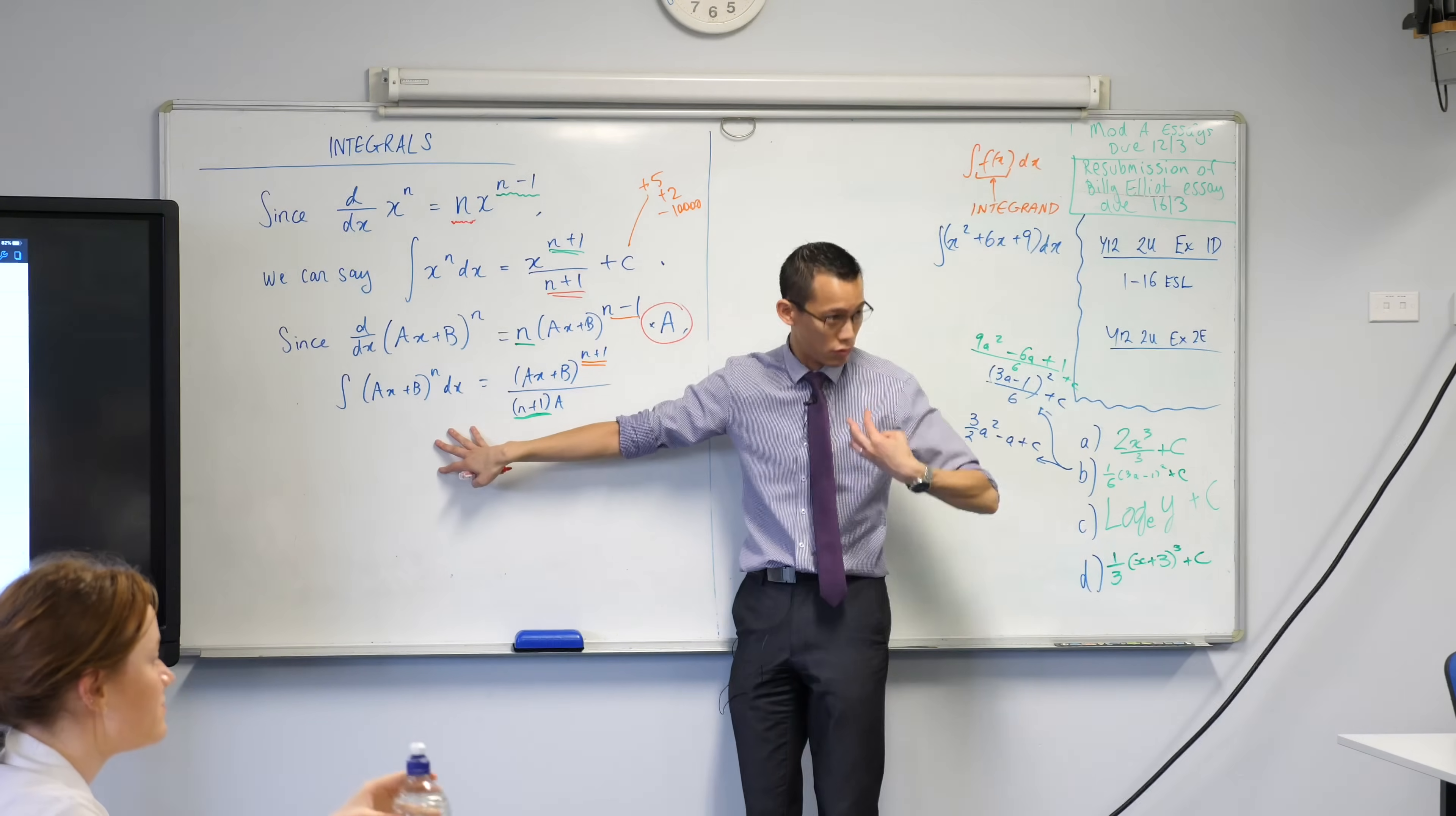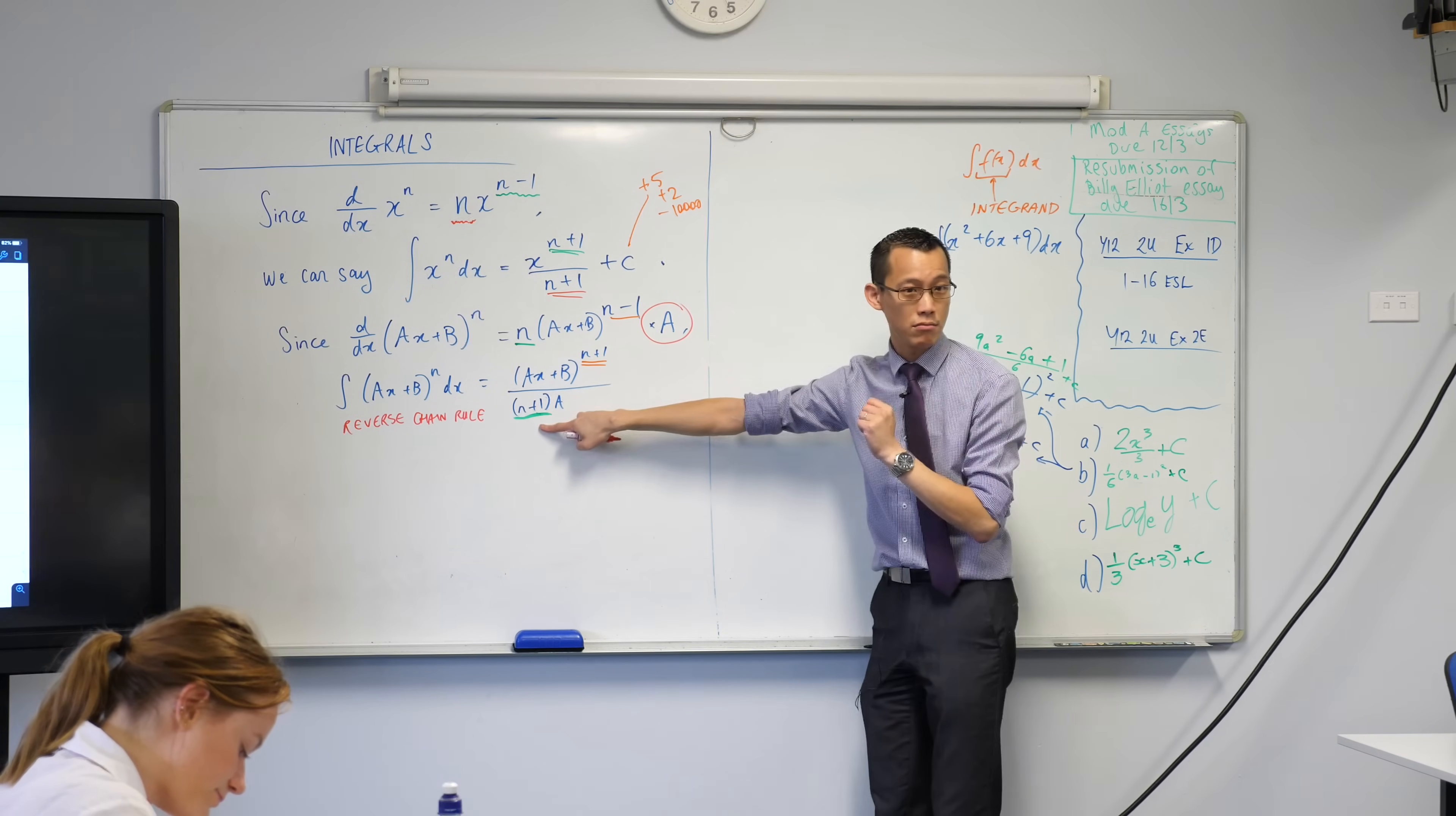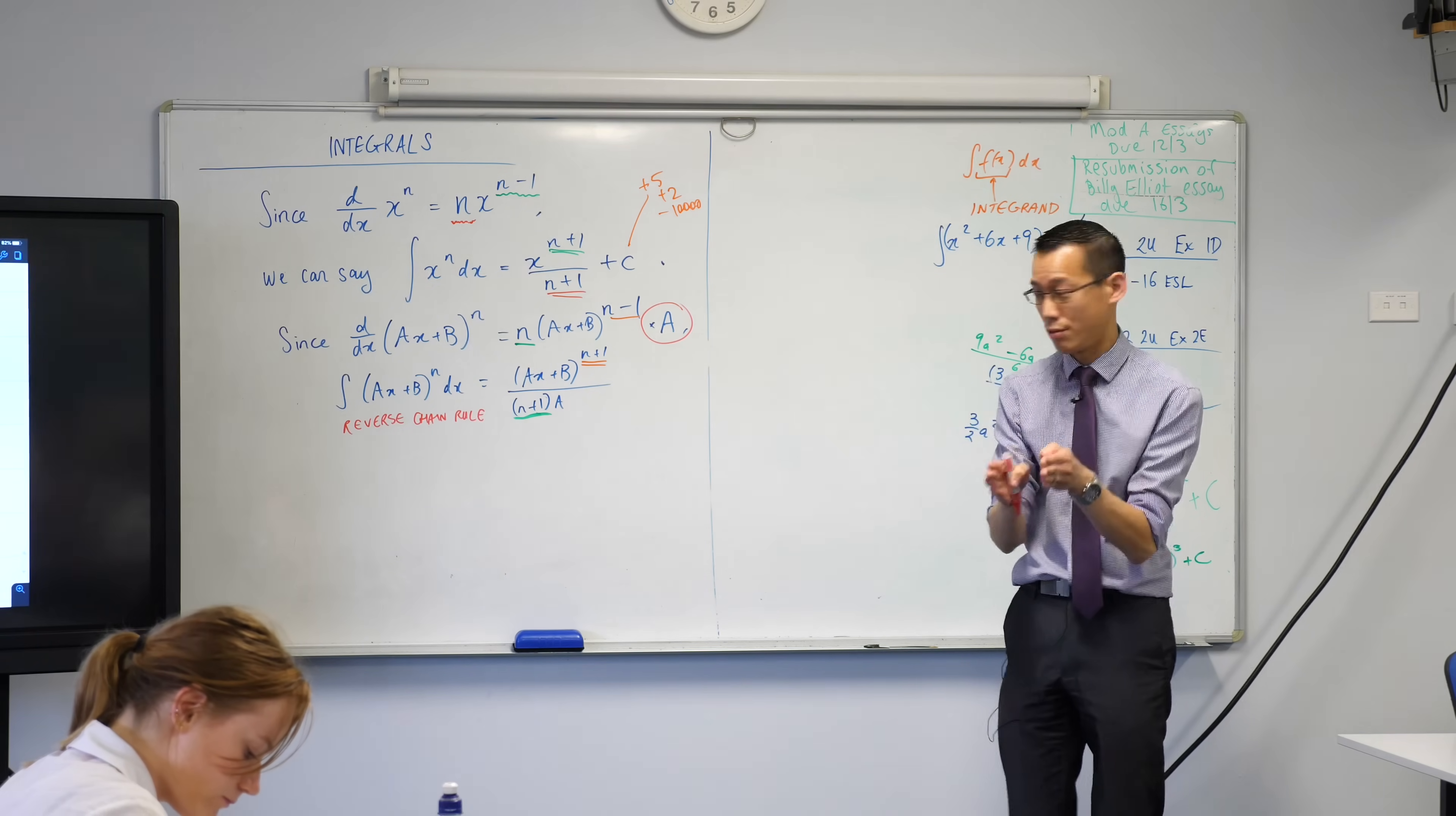Now this is reverse chain rule. In fact, I'm going to write that down, reverse chain rule. So when we look at this n plus 1 and this n plus 1, they come from the outside function, right? They come from something to the power of n. We've dealt with the outside now. n plus 1, n plus 1. But then this is a reverse chain rule. We've got to deal with the inside too.